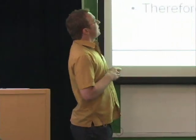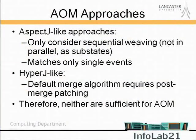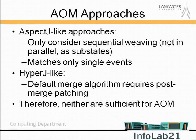Neither of these two approaches is quite enough. The AspectJ-like approaches only tend to match against single events and only support sequential weaving — before, after, and around — without supporting parallel model merging or sub-model embedding. In the HyperJ-like approaches, the default merge algorithm doesn't always produce what you want, and the resulting tweaking can be highly non-trivial. So neither is really sufficient for aspect-oriented modeling.